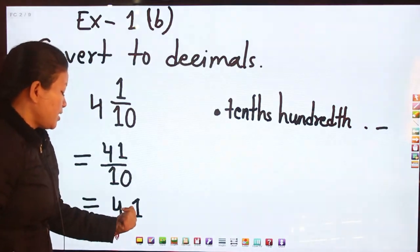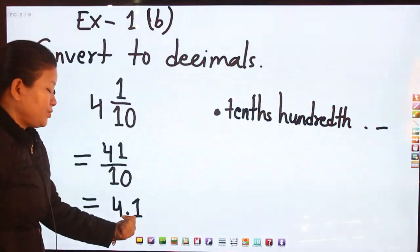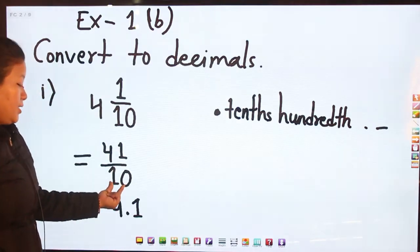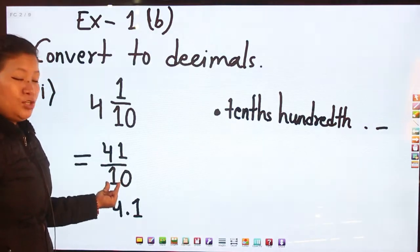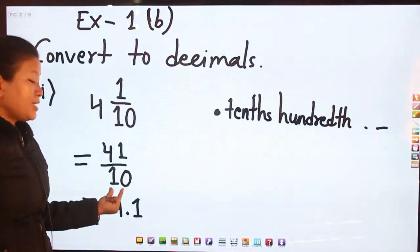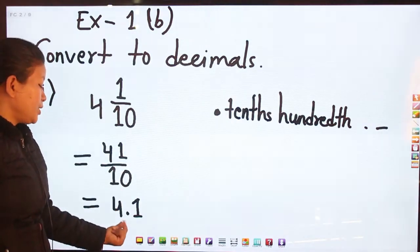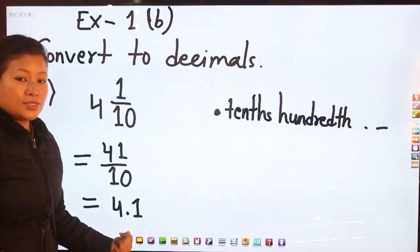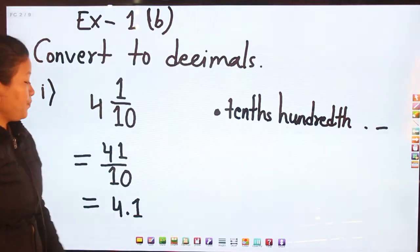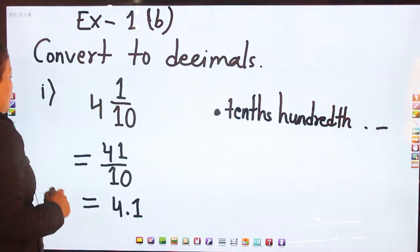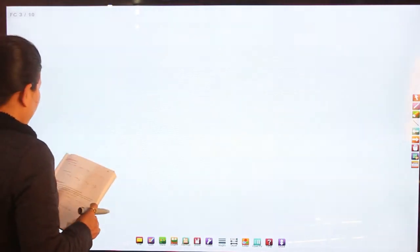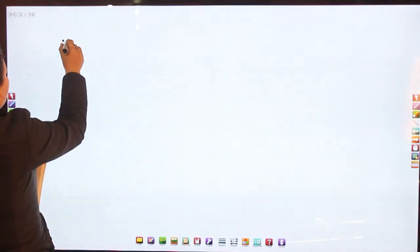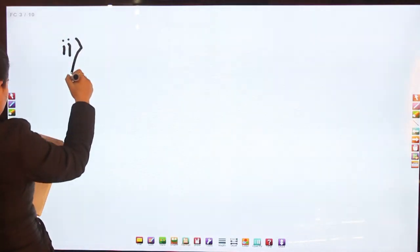This means the 1 is taken out of 10. We have 10 in the denominator, so we put decimal before the digit at the ones place. Now let me write question number two.